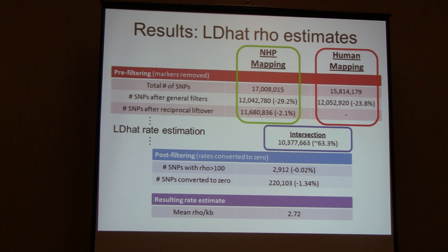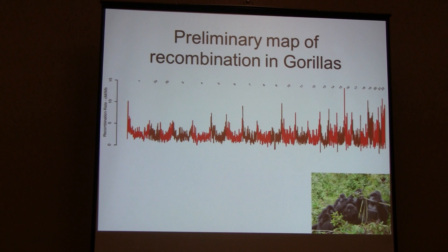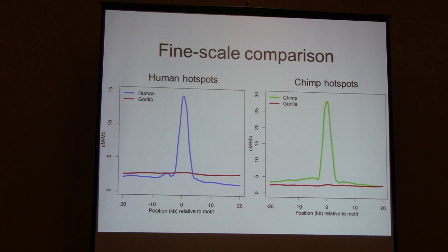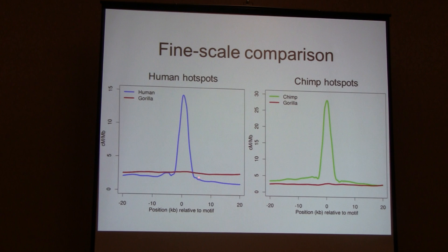Similar to plots shown earlier for humans, here I'm showing gorilla recombination rates for each chromosome in alternating colors. Generally the trends are similar to humans — there's an increase of recombination in the telomeric regions, as seen in the plots Adam showed earlier. Looking at hotspot sharing between species: there is no enrichment of gorilla rates at human hotspots, and no enrichment at chimp hotspots either — consistent with the lack of hotspot sharing seen between humans and chimps.